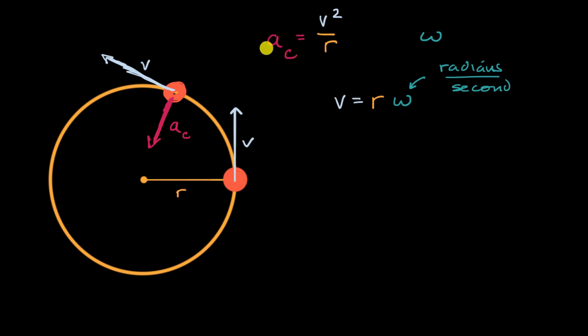If we start with this, the magnitude of our centripetal acceleration is going to be equal to—instead of putting a v squared here, instead of v, I can write r omega. So let me do that: r and then omega.